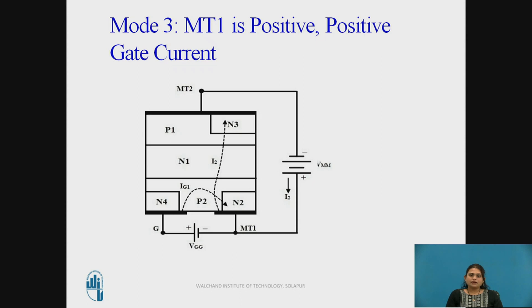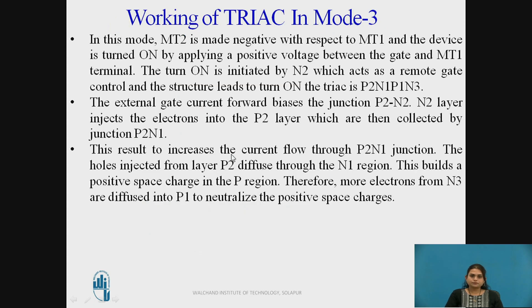In Mode 3, MT1 is positive — the polarities have been reversed — and the gate is positive, so positive gate current is applied. Current flows from the P2 N2 junction, and since MT1 is positive, the final current flows from MT1 to MT2. MT2 is made negative with respect to MT1 and the device is turned on by applying a positive voltage between the gate and MT1 terminal. The turn-on is initiated by N2 which acts as a remote gate control, and the structure that leads to turning on the TRIAC is P2, N1, P1, N3.